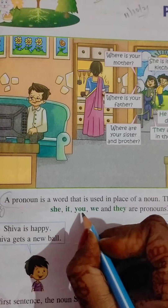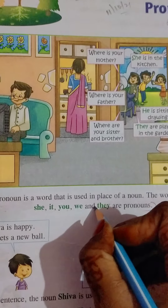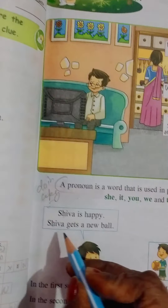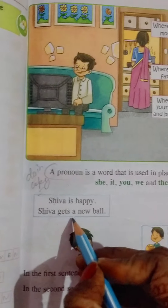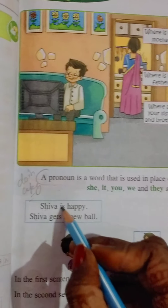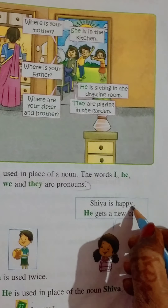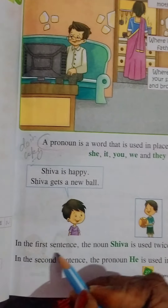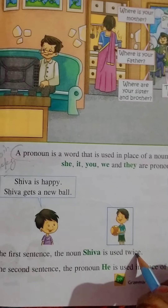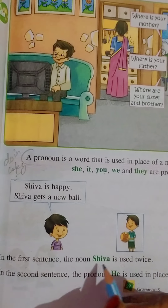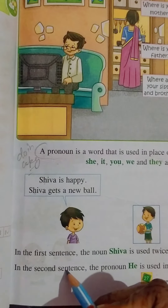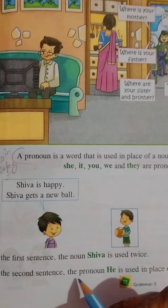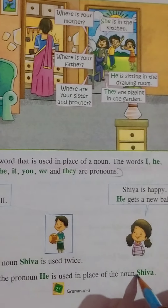She is happy. She gets a new ball. Ab yahan pe do baar noun use hua hai. Dekiye ab iski jagah pronoun use karenge — Shiva is happy. He gets a new ball. In the first sentence, the noun Shiva is used twice. In the second sentence, the pronoun 'he' is used in place of the noun Shiva.